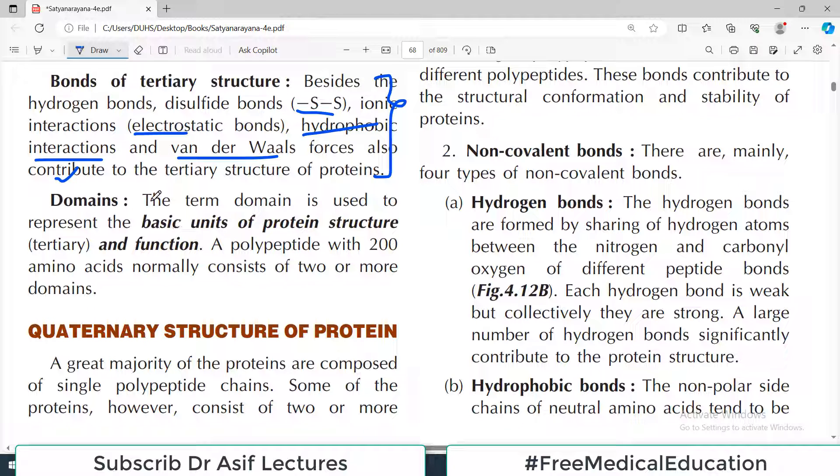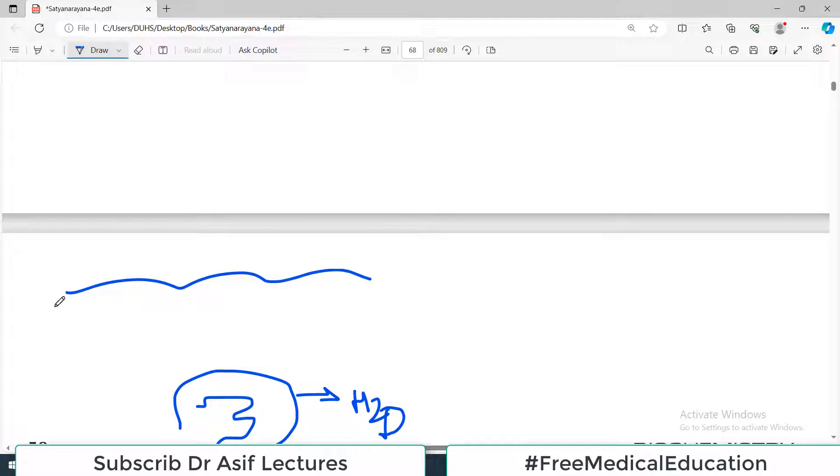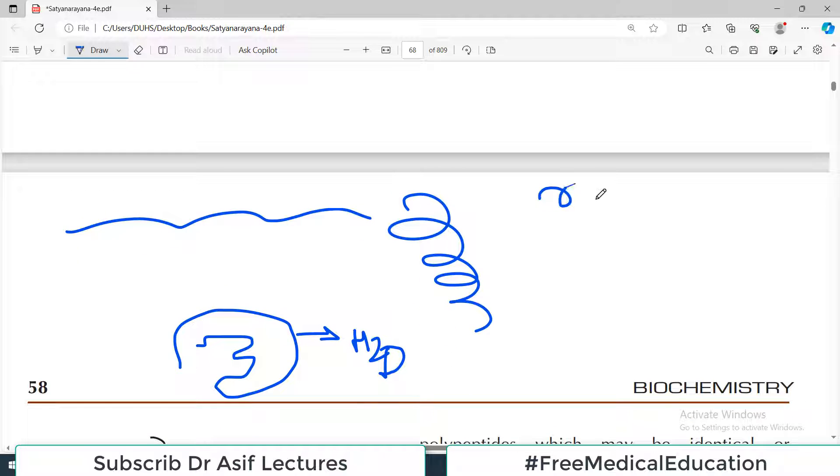The term domain is used to represent the basic structure or basic unit of the protein as well as its function. Domain means, for example, suppose I have a lengthy protein - that's the primary structure. Then it becomes alpha helix - that's the secondary structure. Now the alpha helix forms a three-dimensional structure. So it may be that this part of the protein binds to a receptor. Then we name it the receptor binding domain.